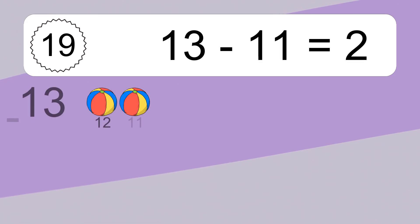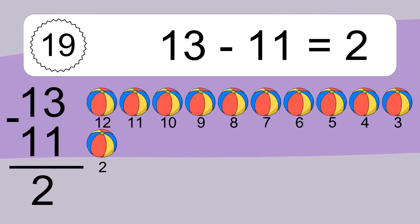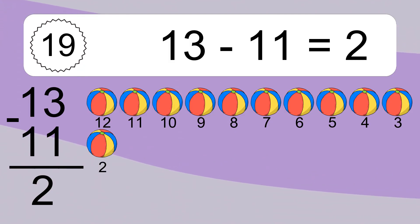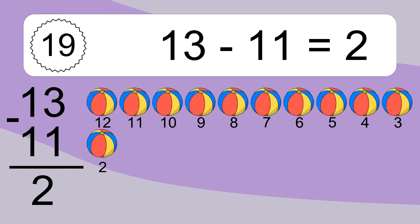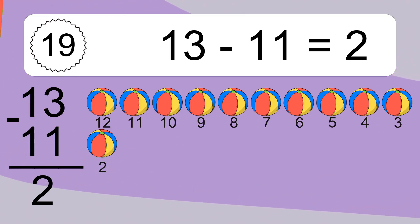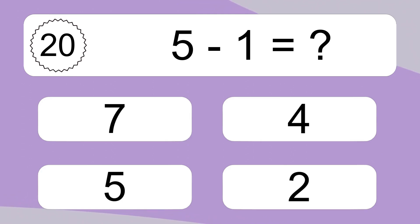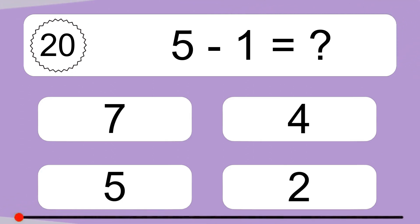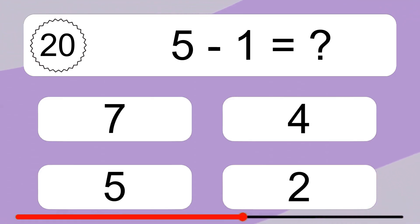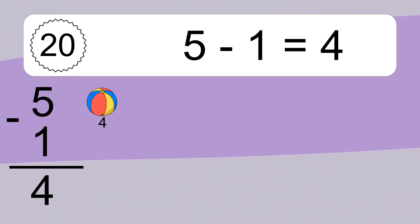13 minus 11 equals 2. Let's count it: 12, 11, 10, 9, 8, 7, 6, 5, 4, 3, 2. 5 minus 1 equals what? 5 minus 1 equals 4. Let's count it: 4.